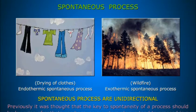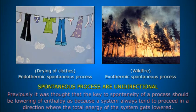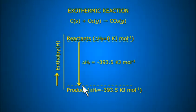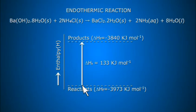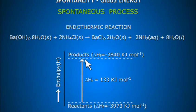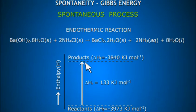Previously it was thought that the key to spontaneity of a process should be the lowering of enthalpy, because a system always tends to proceed in a direction where the total energy of the system gets lowered. This actually happens in the case of exothermic processes where there is a distinct lowering of enthalpy. However, the logic fails for endothermic processes where the enthalpy of the system is raised. It was observed that the chaotic or random nature of the system increases in the case of endothermic spontaneous processes.